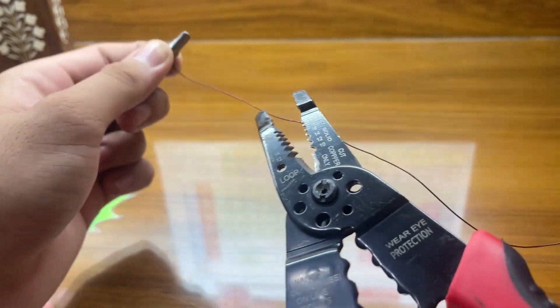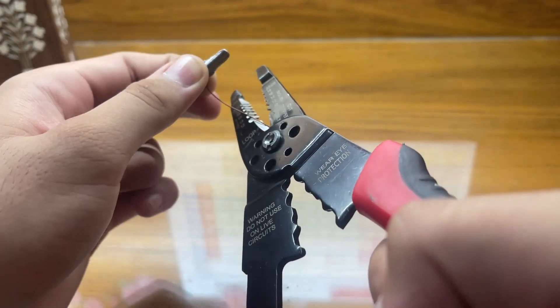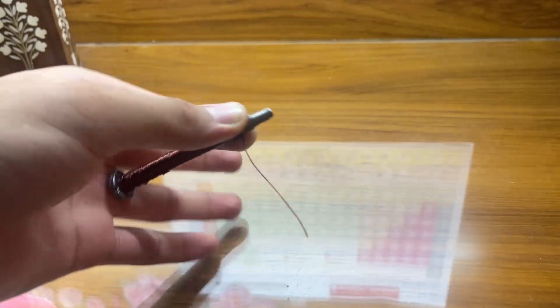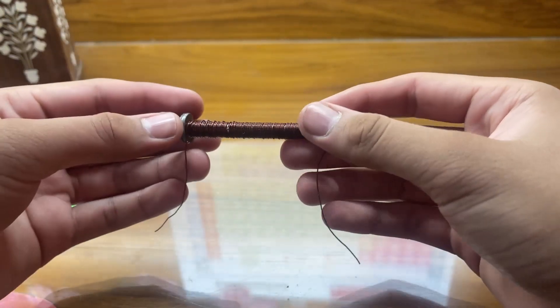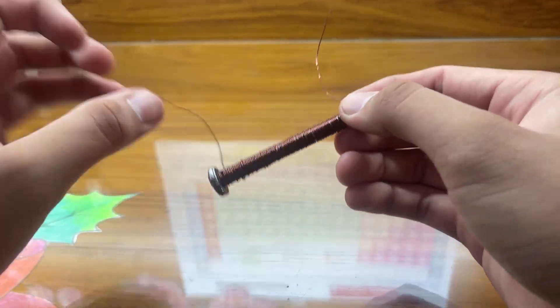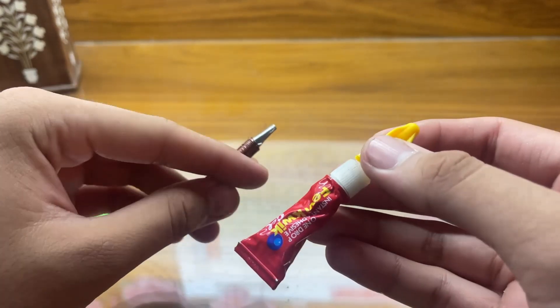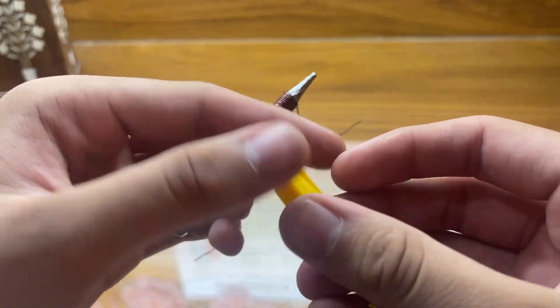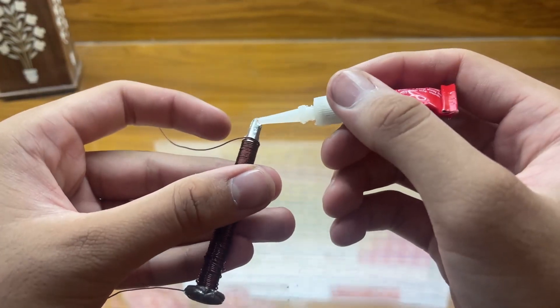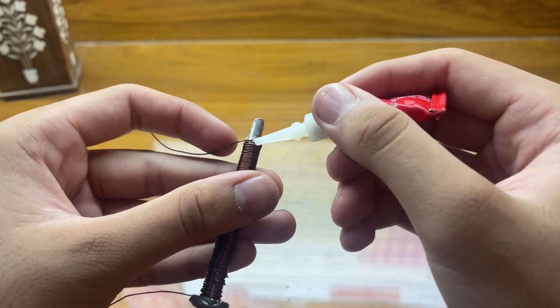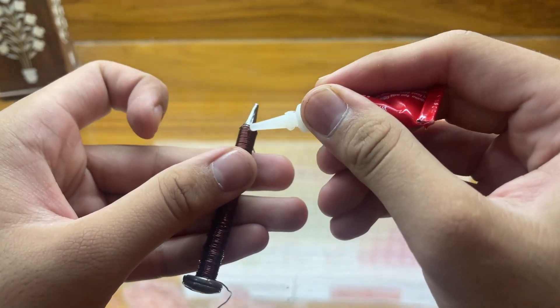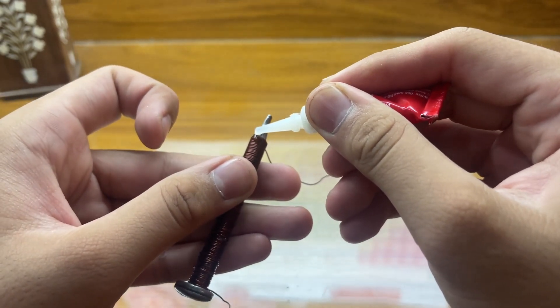I'll be using my wire cutters to cut it. As you can see, we're done coating our whole nail with wire. We're going to use some super glue at the end to secure it down so it doesn't come apart while using it. I'll just be applying a generous amount of super glue.